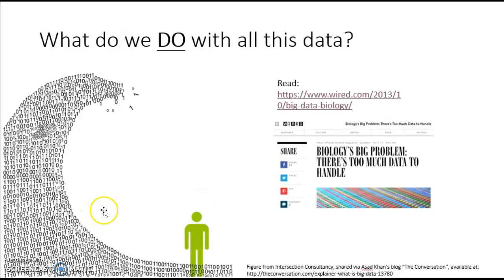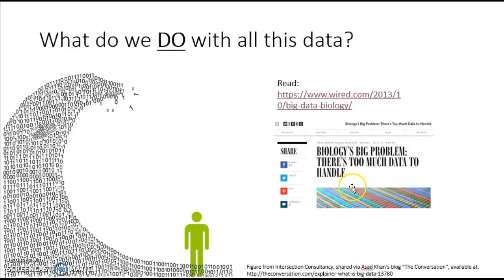So what we're going to talk about next is what we do with all this data — how do we not be overwhelmed by gigabytes and gigabytes of information? This is really where people like you come in. We need innovative, clever people who understand the fundamentals of genetics and computer science and statistics, and can put this information together to solve problems and ask questions. If you want to read more about opportunities in that area, check out the article at Wired. Next, you should move on to the next lecture linked in this lecture series.